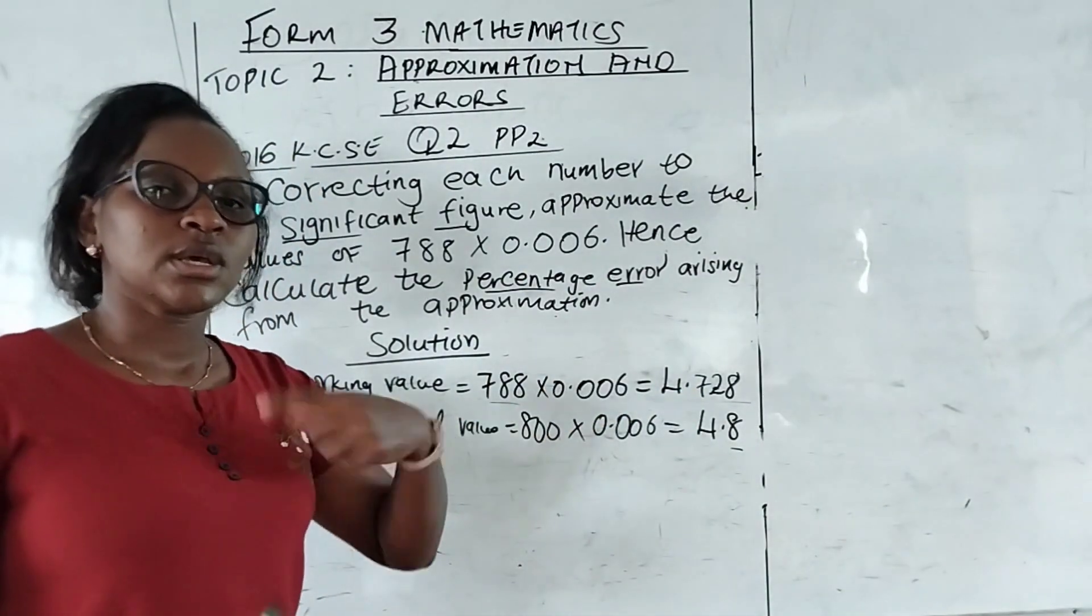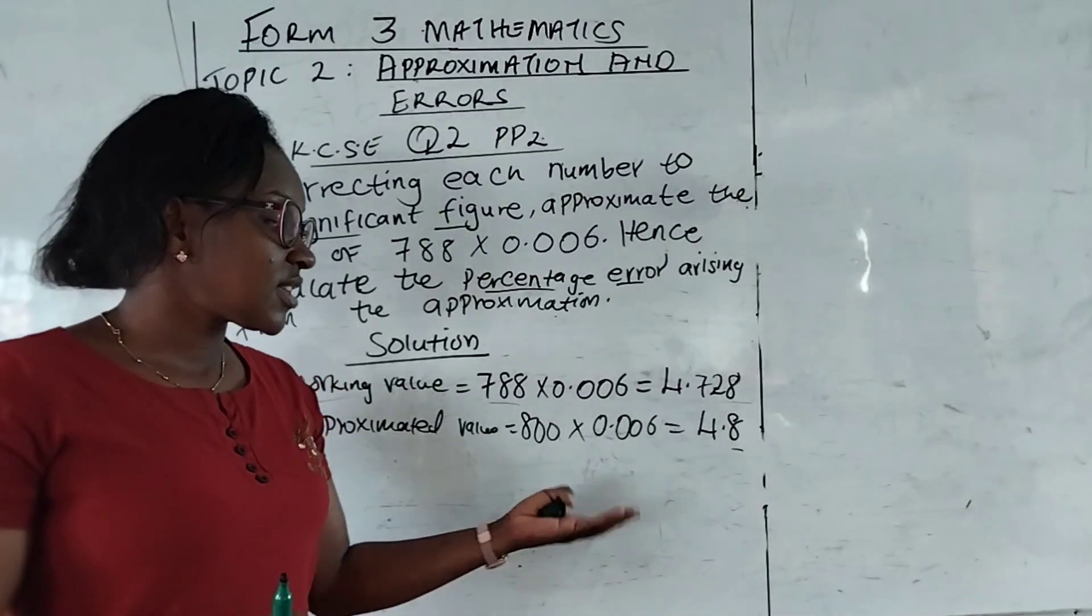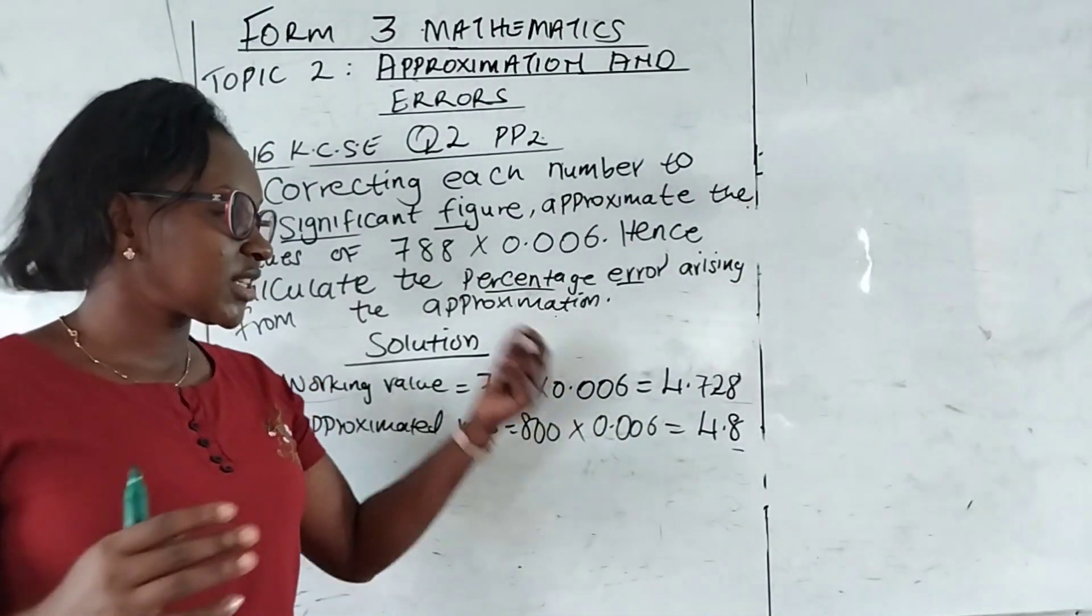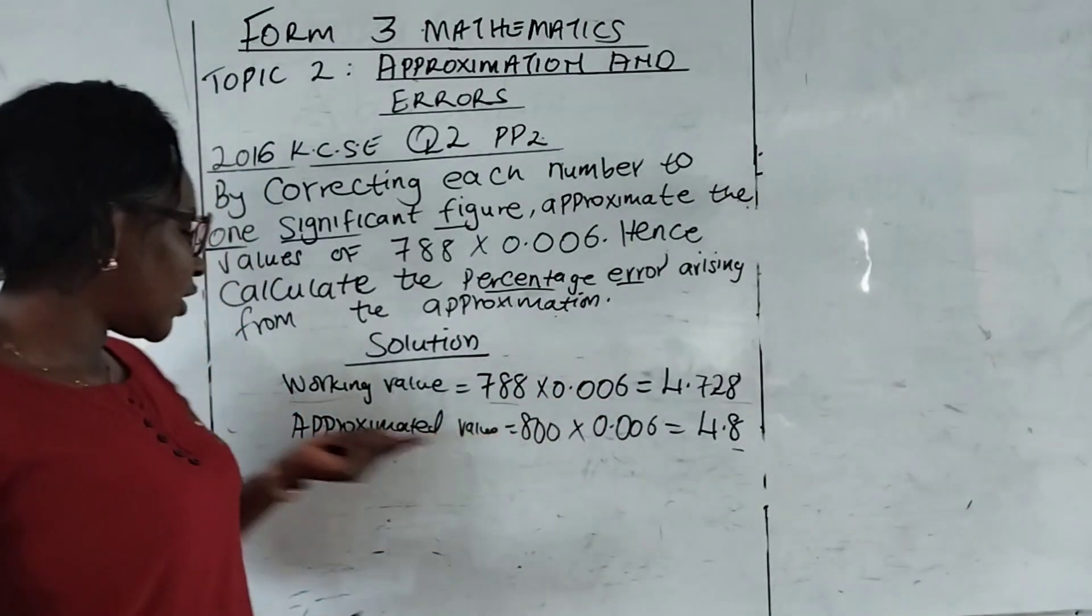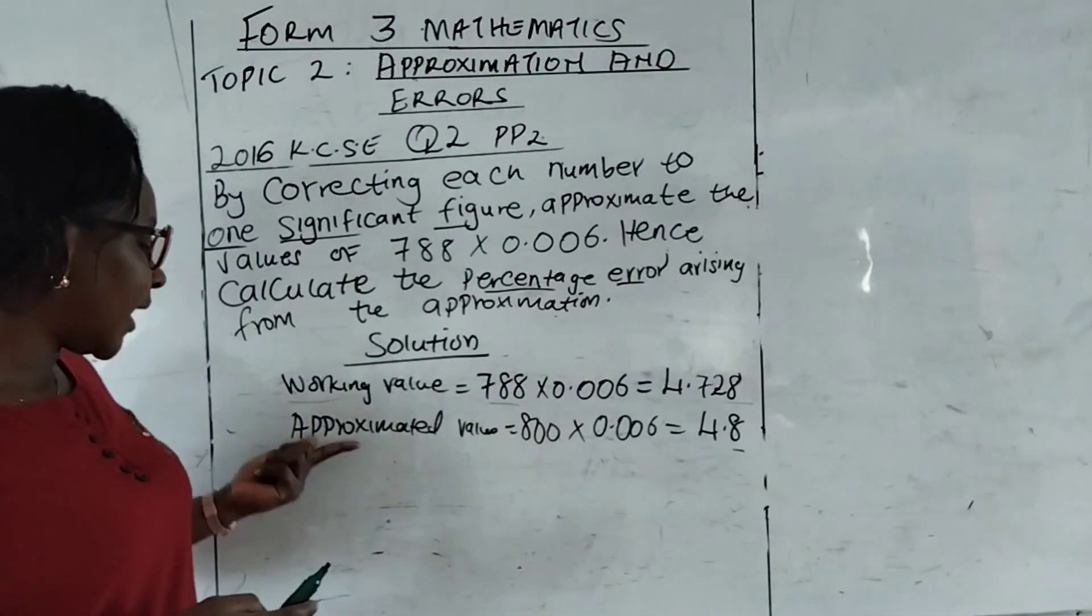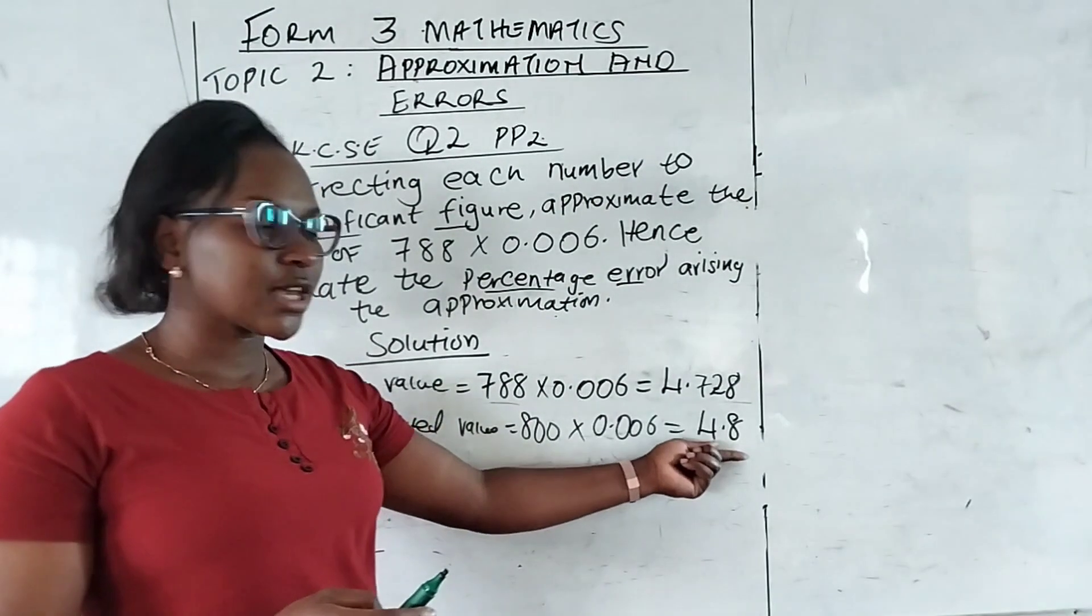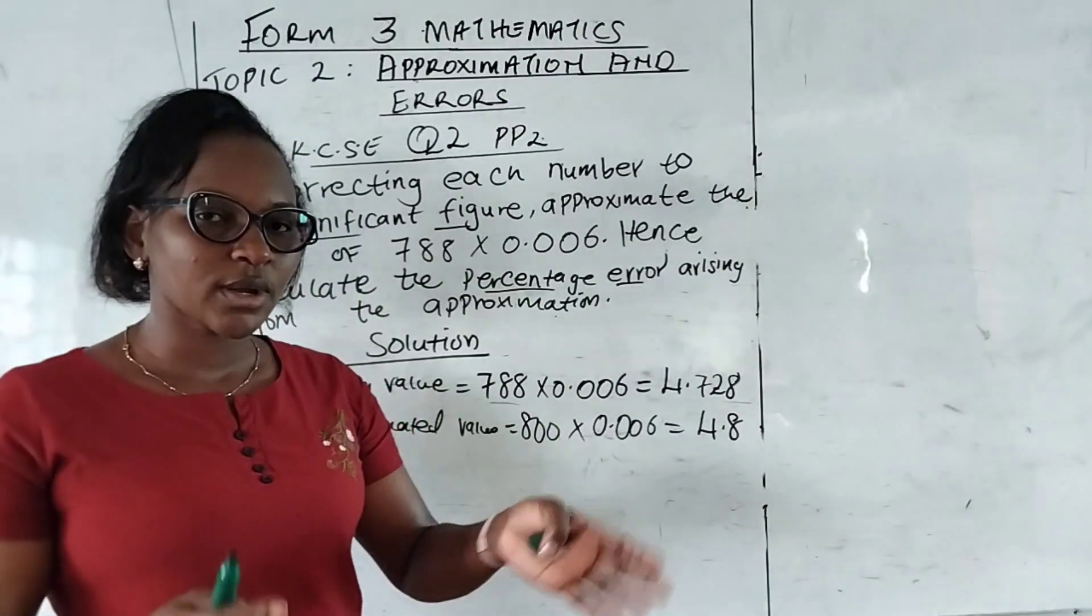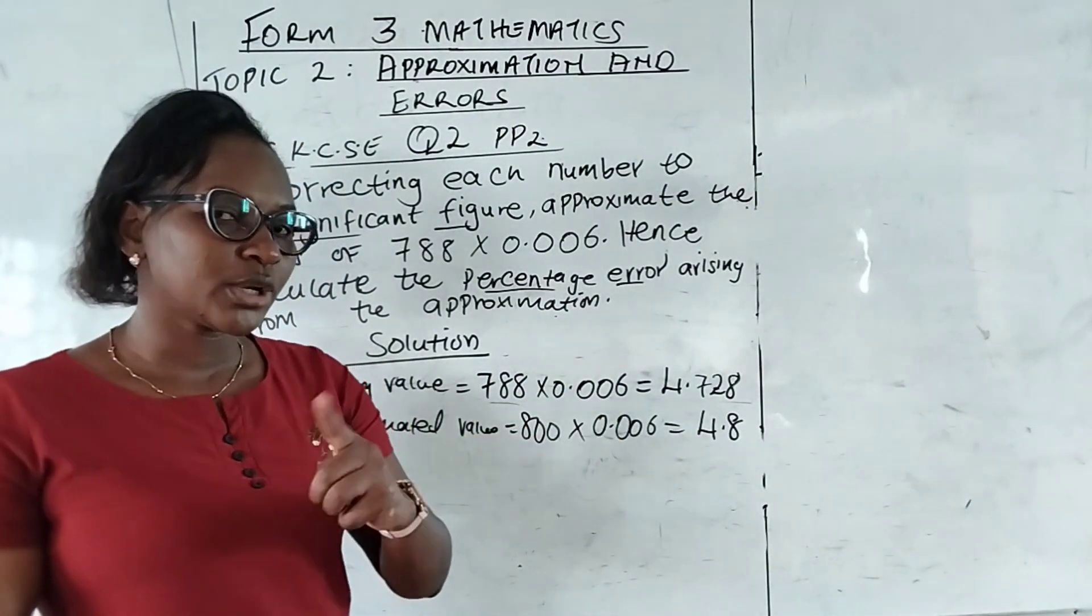Those methods, they vary from one question to another. For instance, now in this case, we do not have the minimum value or the maximum value. Now for our case here, this one is like the actual, because it's what we have. And after approximation, whatever the answer that we have here is our approximated value. Certainly, we have more than one method of how we can get the absolute error.